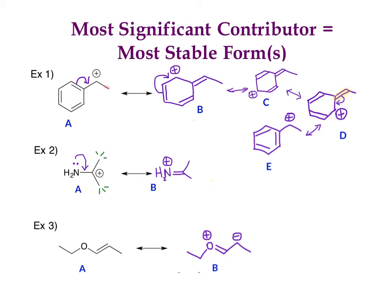Now let's look at the examples. Starting with example 2, we have forms A and B. First: is everything all octet? Structure A has a carbocation — a positively charged carbon with only six electrons — so it's not octet. Structure B has a positively charged nitrogen, which still has an octet. So B meets rule 1 and A does not. We stop here: B is the more stable form, and we mark it with a star.